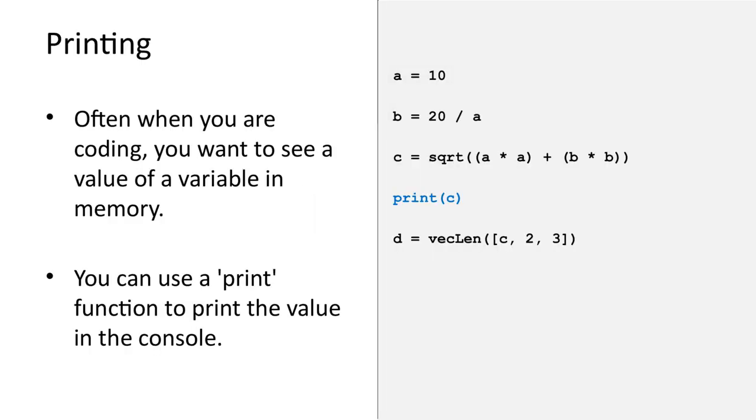When debugging, you often want to see the value of a variable in memory. Programming languages will provide a function to display values in the console. For example, Python provides the print function. And JavaScript provides the console.log function. We will refer to it as printing a variable.